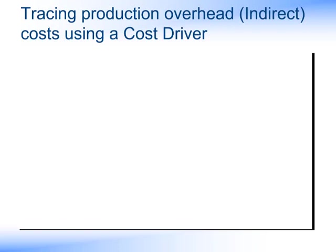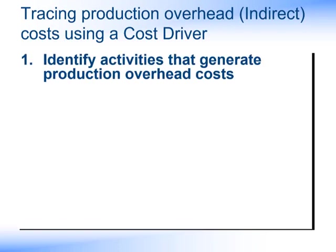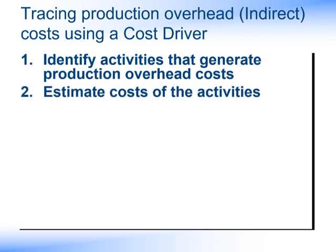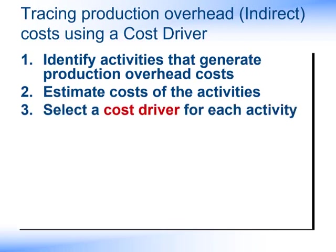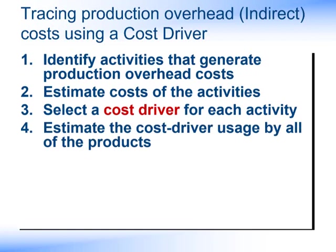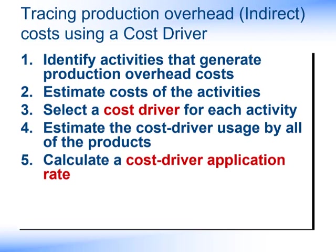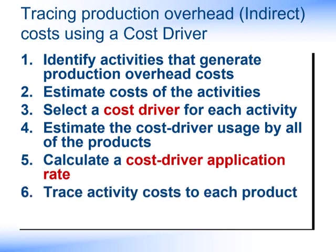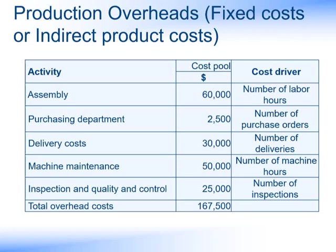Let's look at using activity-based costing as a means of allocating the overheads across the three products. We can look at activity-based costing as a series of steps. We first need to identify the activities that generate the production overhead costs. Then we need to estimate the costs of the activities. Then select a cost driver for each activity. Estimate the cost driver usage by all of the products. Calculate a cost driver application rate. And then trace the activity costs to each product. We're given our $167,500 overheads and what we've done is broken it down into a series of activities to which we can logically allocate costs. These are called cost pools.